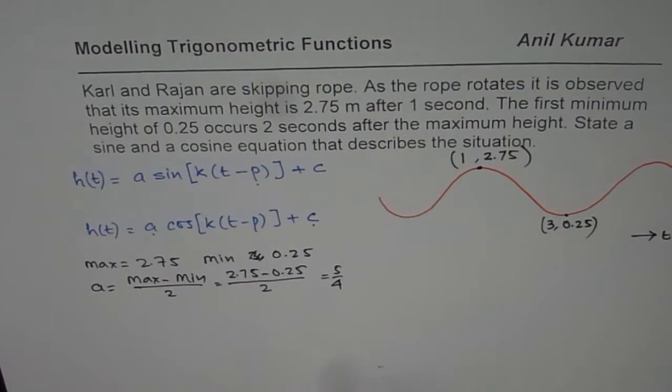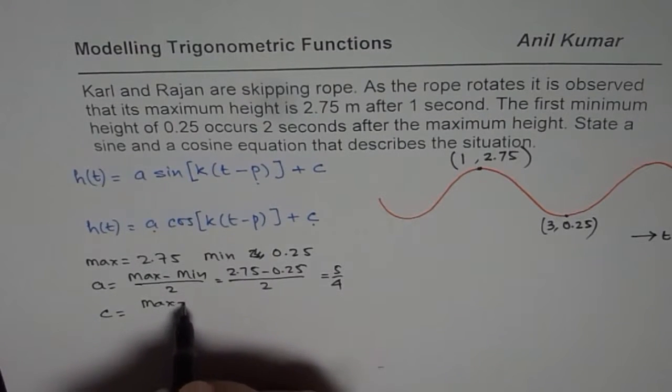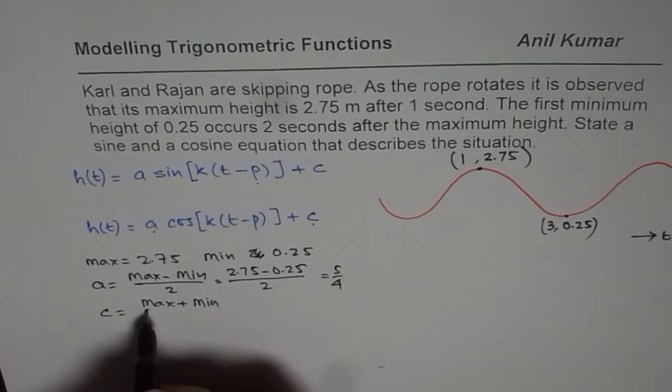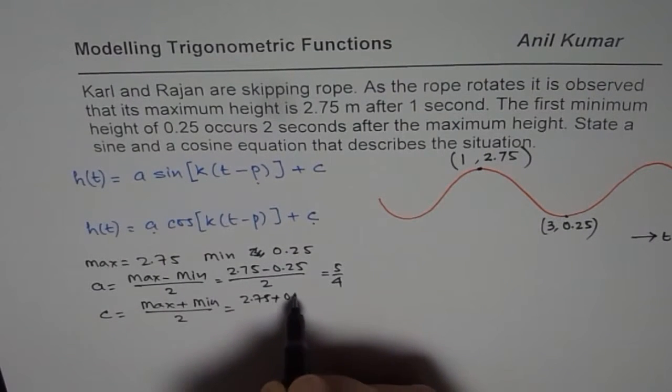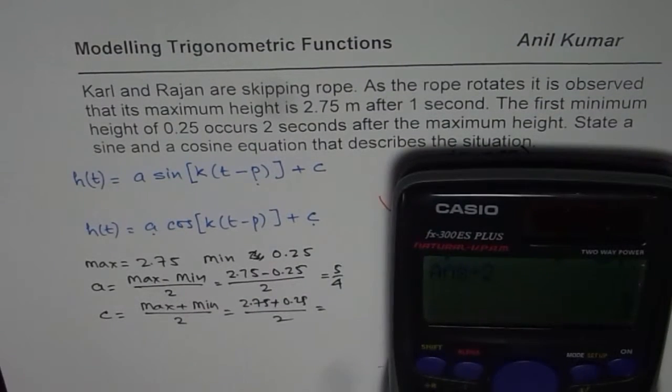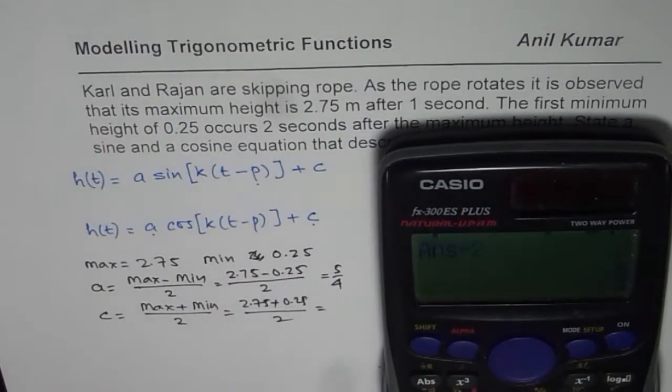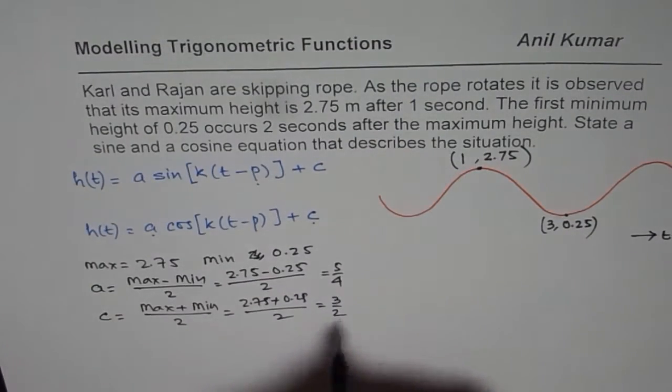Now the axis is the average value. So it is maximum plus minimum divided by 2. That is 2.75 plus 0.25 divided by 2. It looks like 1.5, but let us calculate. 2.75 plus 0.25 equals, then divide by 2. 3 over 2. So we get 3 over 2 as the axis.